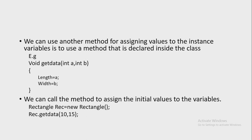There is another method for assigning values to instance variables. Suppose there is a getData function declared inside the class, which is used to assign values to instance variables. In the example, getData has a parameter list of integer a and integer b, and inside the method, length = a and width = b.